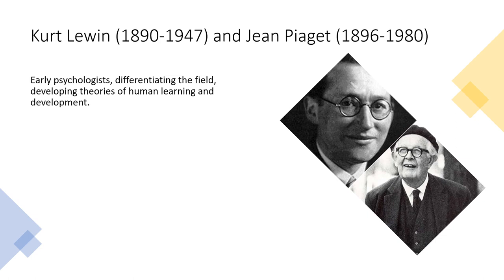As adult education professor David Boud and his colleagues explained, reflection is an important human activity in which people recapture their experience, think about it, mull it over and evaluate it. It is this working with experience that is important in learning. When a person is experiencing something, he or she may be implicitly learning. However, it can be difficult to put emotions, events and thoughts into a coherent sequence of events. When a person rethinks or retells events, it's possible to categorise them along with emotions and ideas and to compare the intended purpose of past action with the results of it. Stepping back from the action permits critical reflection on a sequence of events.